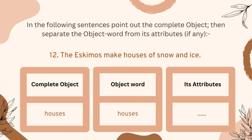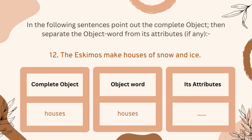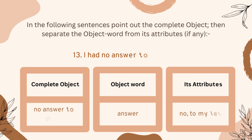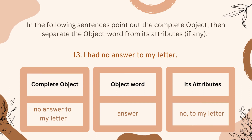Number twelve: 'The Eskimos make houses of snow and ice.' 'Houses' is the complete object and the object word. We don't have any attribute for this word in this example.